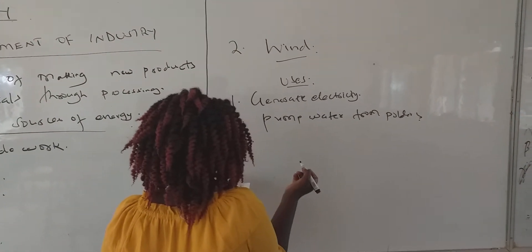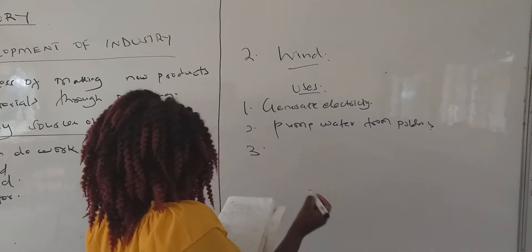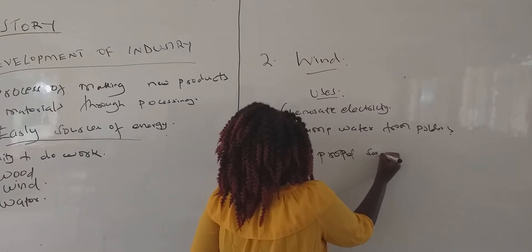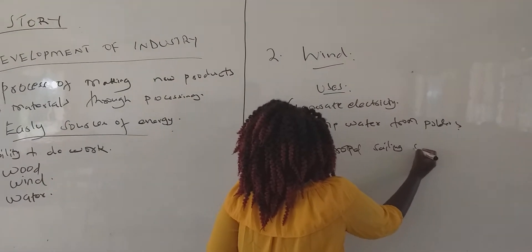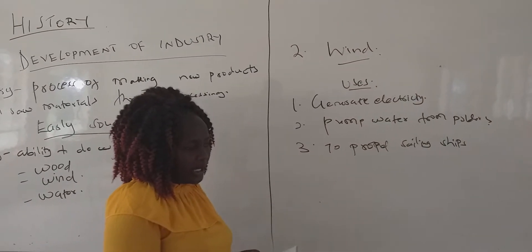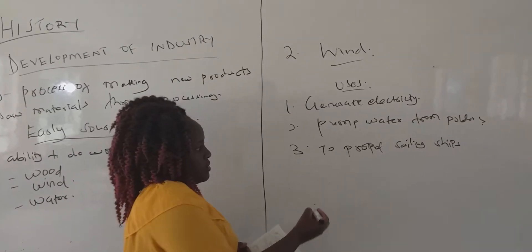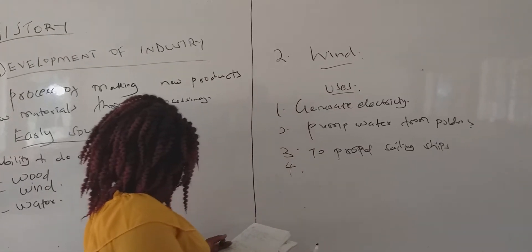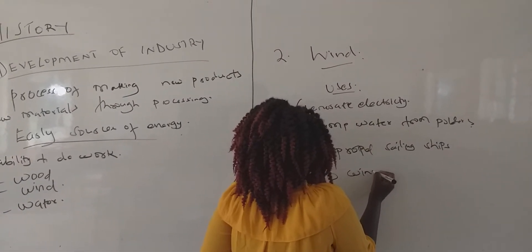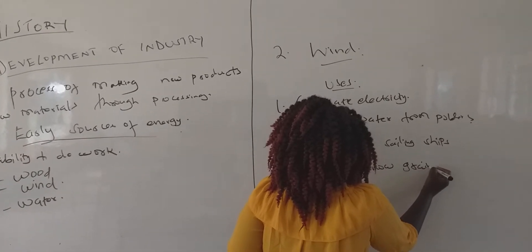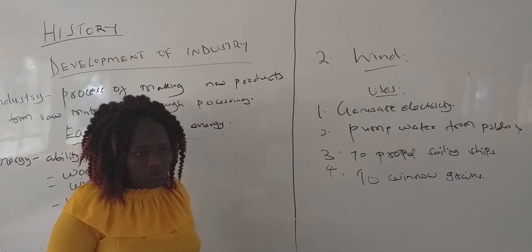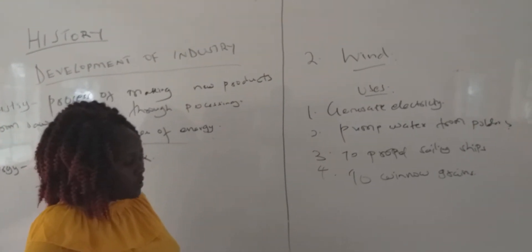Wind is used to generate electricity. Two: it is used to pump water. Three: it is used to propel sailing ships — whereby wind energy is used to propel them forward. And the last use: it is also used to winnow grains — an equipment separates the grain from the actual chaff using wind.